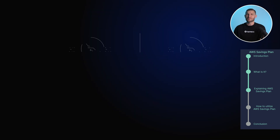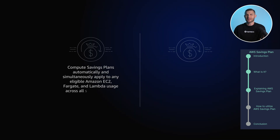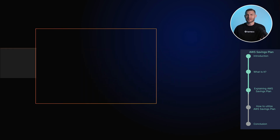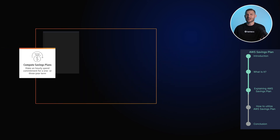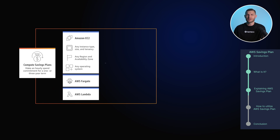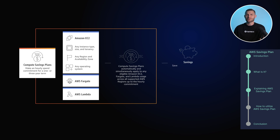There are two types of AWS Savings Plans: Compute Savings Plans or EC2 Instance Savings Plans. Compute Savings Plans gives you a discount on compute usage across any AWS region, instance family, operating systems, or tenancy. This means you get savings regardless of the specific instance type you use.